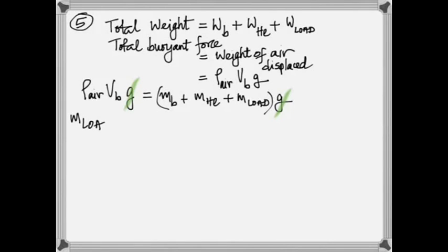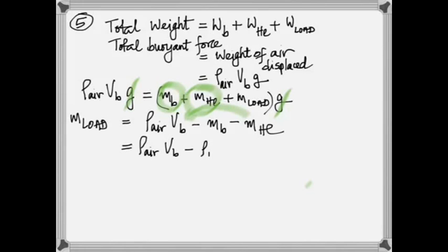Cancel the g's. So I make the mass of the load the subject. Is that sensible mathematically? Is that correct? All I did is take these two quantities onto the other side so they became negative, right? I'm showing that that's how it became negative, just changing the place.